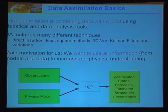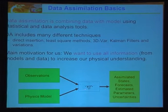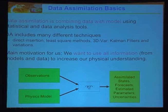Here's the schematic: we have observations, we have a physical model, this information is fed into a data assimilation method such as Kalman filtering, and then we have an assimilated state that gives you a good forecast, estimates, parameters, and also provides uncertainties.